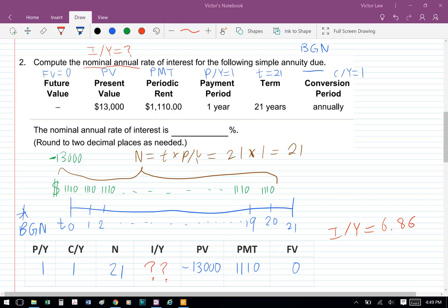When we plug it into the financial calculator, we'll get nominal interest rate of 6.86%, and that is question 2. Thank you.